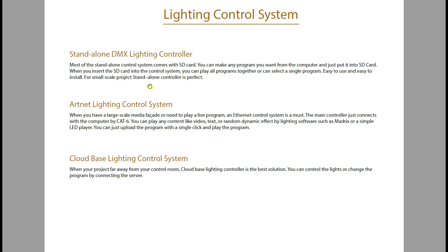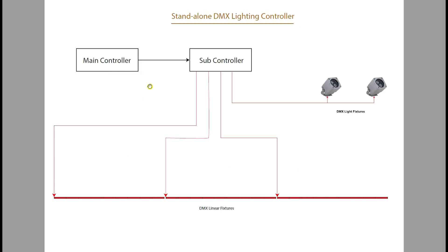The standalone control system has one main controller that connects to subcontrollers. From the subcontrollers, you can connect different types of DMX-compatible light fittings — such as linear lights or floodlights — whatever type you want to control.